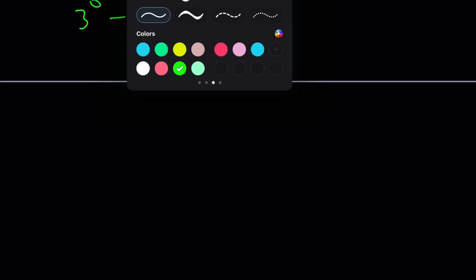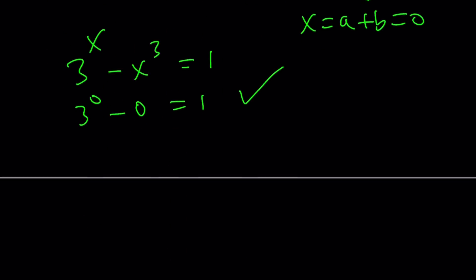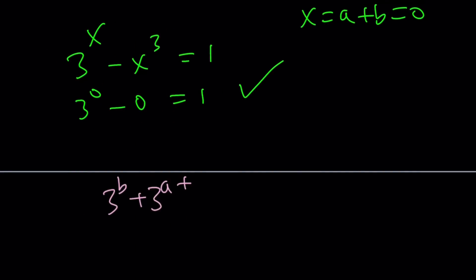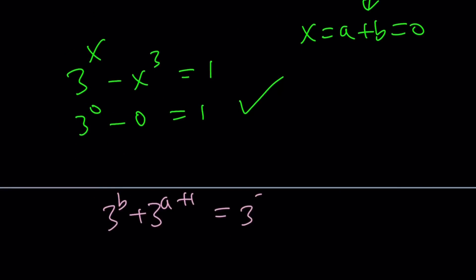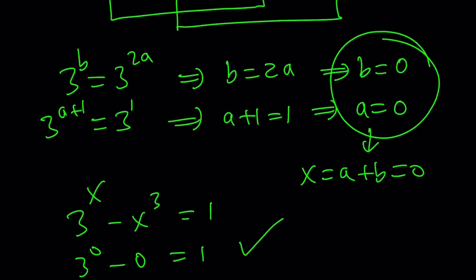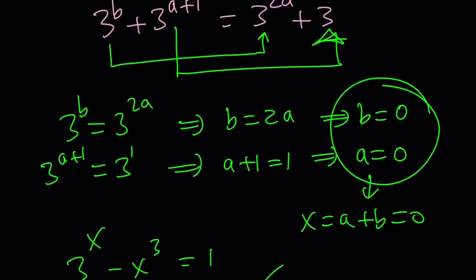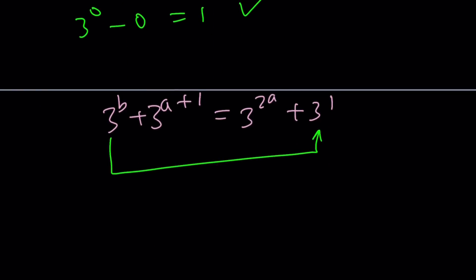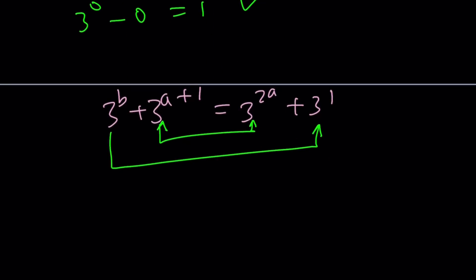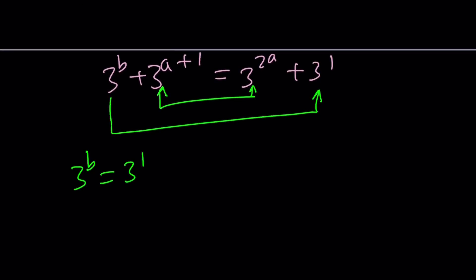The other scenario. Let me rewrite this equation. 3 to the power b plus 3 to the power a plus 1 equals 3 to the power 2a plus 3 to the power 1. Let me write the one so I don't mess up again. Now, we're going to look at the second scenario. The second scenario is, remember how we matched them up? First and first, second and second. Now, we're going to do the first and second. Kind of like this. Crisscross applesauce. So, I'm going to match it up like this and like that. 3 to the power b equals 3 to the power 1. 3 to the power a plus 1 equals 3 to the power 2a.